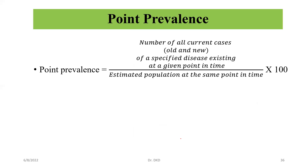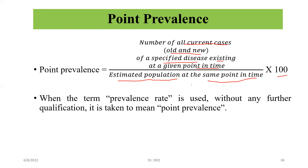We can calculate point prevalence as: number of all current cases (old and new) of a specified disease existing at a given point in time, divided by the estimated population at the same point in time, multiplied by 100. When the term prevalence rate is used without any further qualification, it is taken to mean point prevalence.